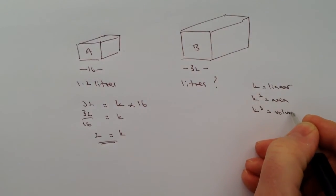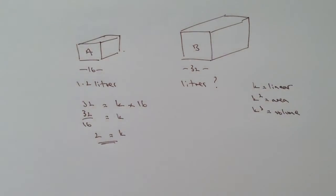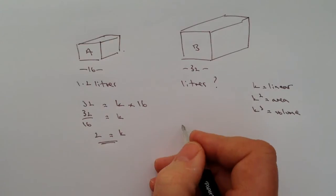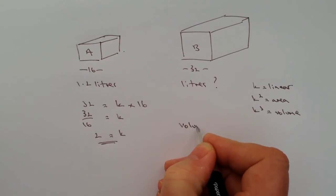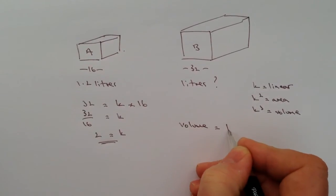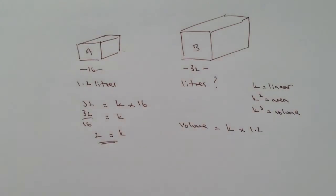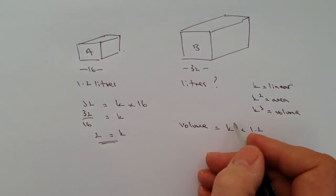Now in this particular case we're looking at litres which is a volume relationship. So what we're saying is that the volume of the large case here is going to be K cubed multiplied by 1.2 litres, 1.2 litres for the original shape. But remember that it's K cubed, it's a volume relationship.